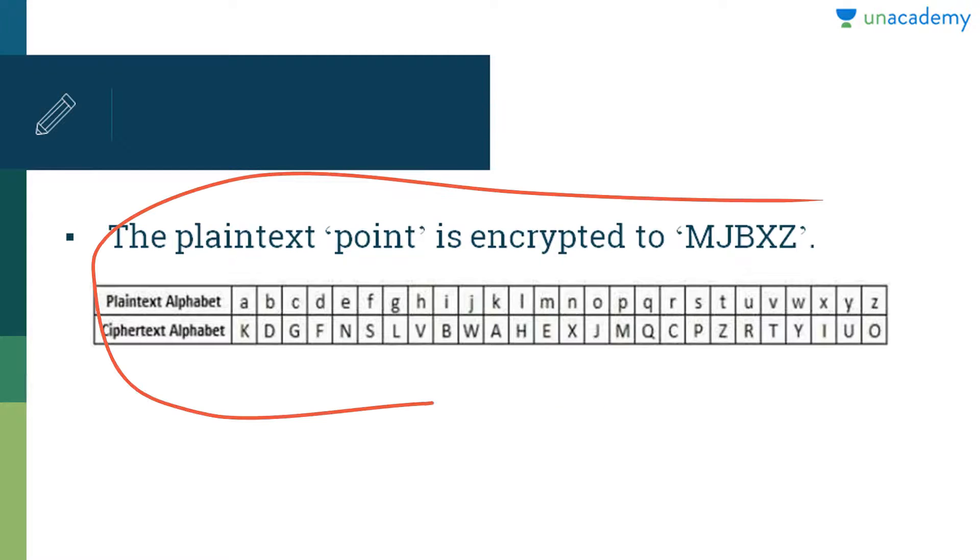So here as you can see on the screen, the sender and the receiver decide on a randomly selected permutation of the letters of the alphabet. So first we write the natural order of the alphabet and right below it, we write the chosen permutation of the letters of the alphabet. So my permutation is K, D, G, F, N, S, L, V till I, U, O.